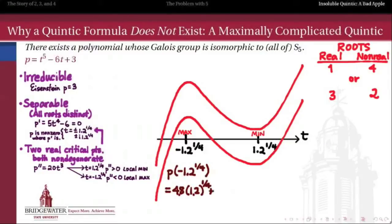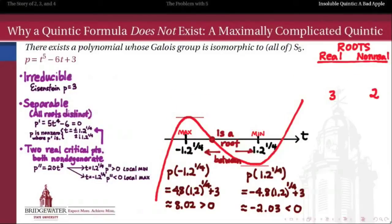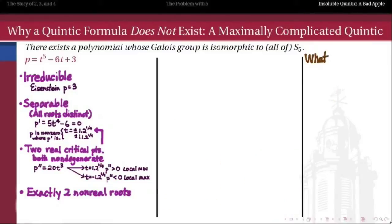Let's figure out which case our polynomial falls into by evaluating p at both critical points. At its local maximum the value of p is about 8.02, so it's positive. At its local minimum the value of p is about negative 2.03, which is negative. In other words, there is a sign change between its local maximum and its local minimum. Therefore, because this is a continuous function and we have the intermediate value theorem, there has to be a root between that local maximum and that local minimum. This rules out the case of only one real root — therefore this polynomial has exactly three real roots and two roots that are not real.